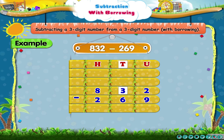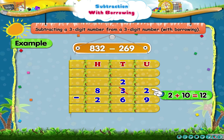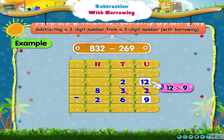From 3 tens, when we subtract 1 ten, we get 2 tens. This 1 ten, when we add to 2 units, we get 12 units. Now, 12 is greater than 9. So, 12 minus 9 equals 3.